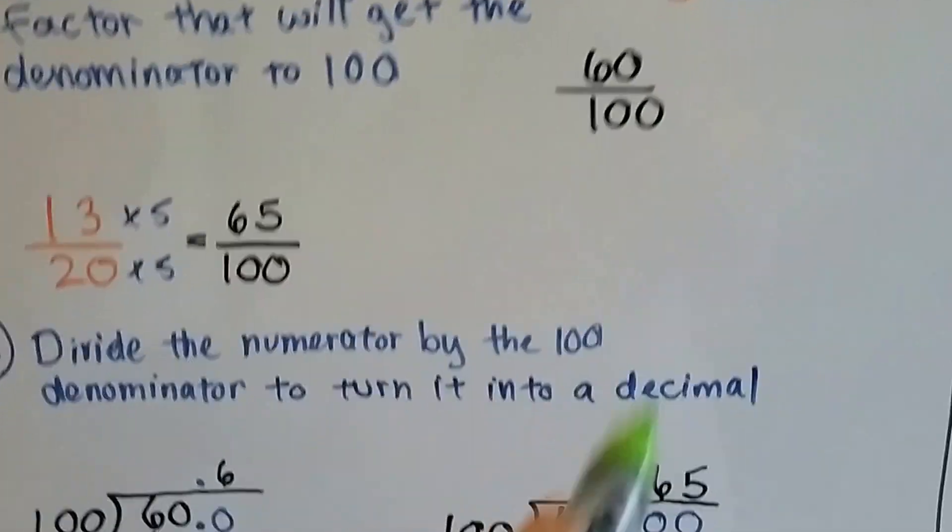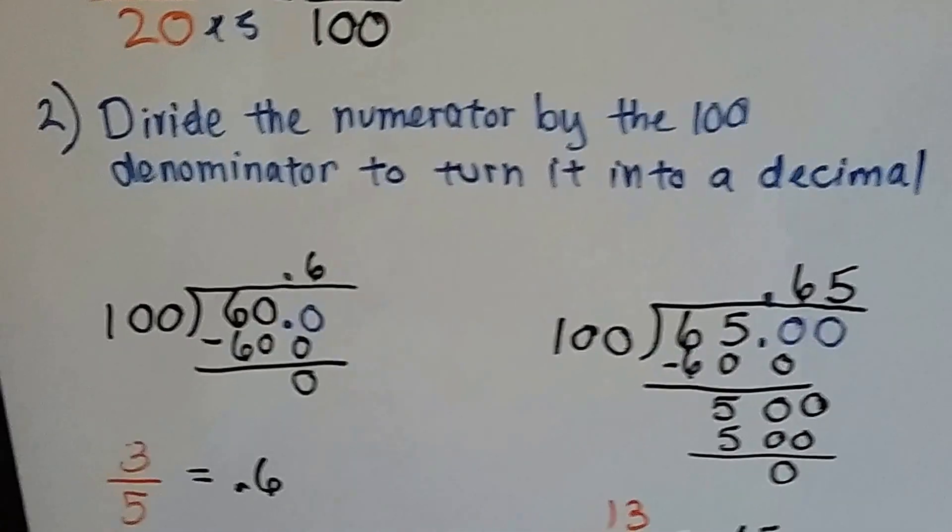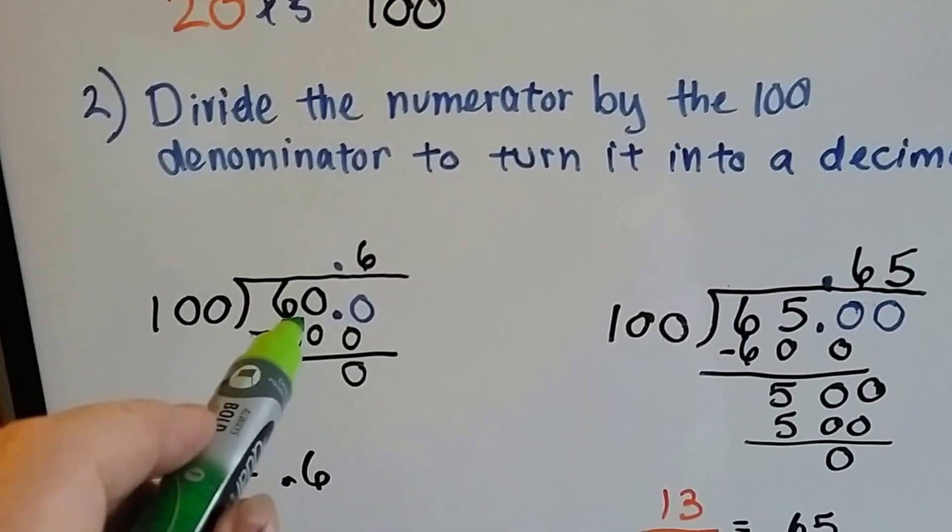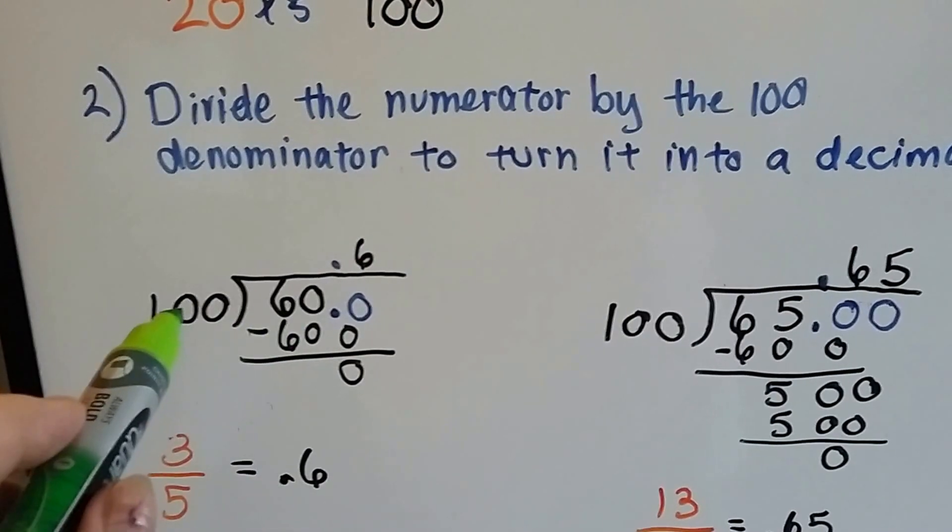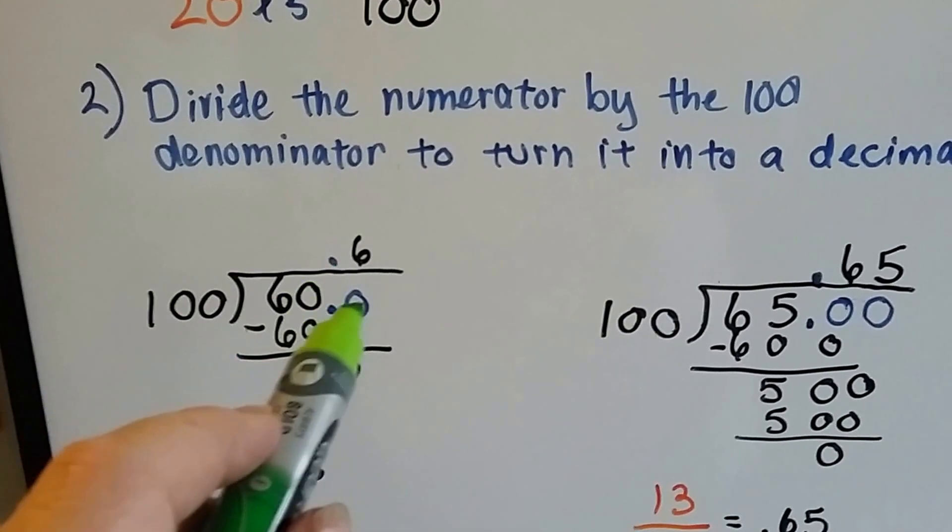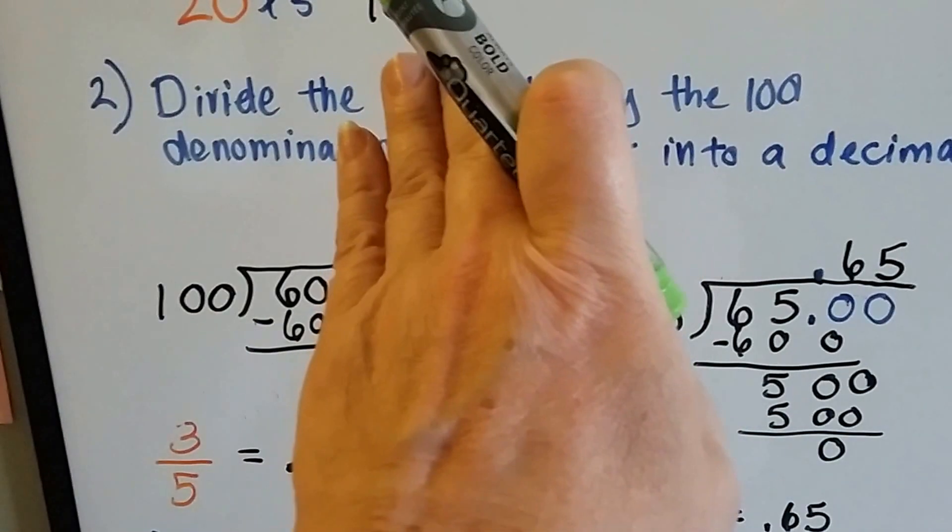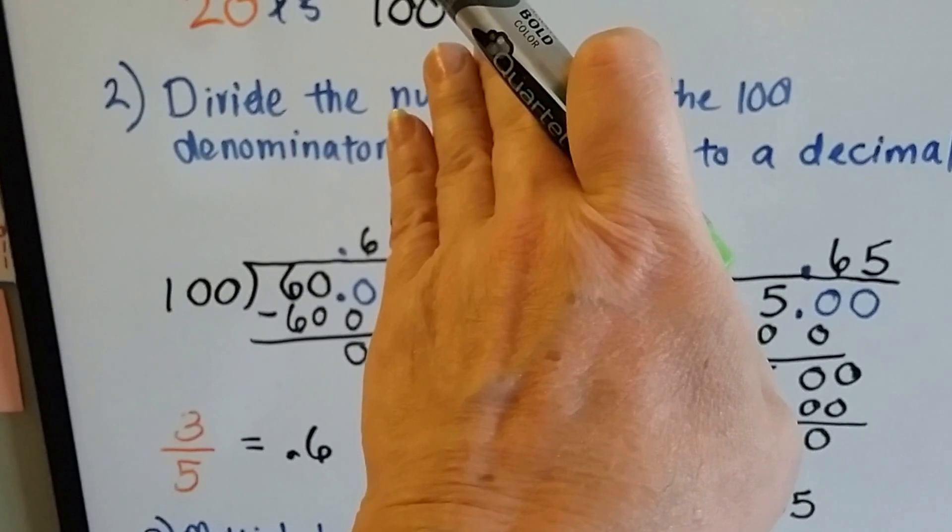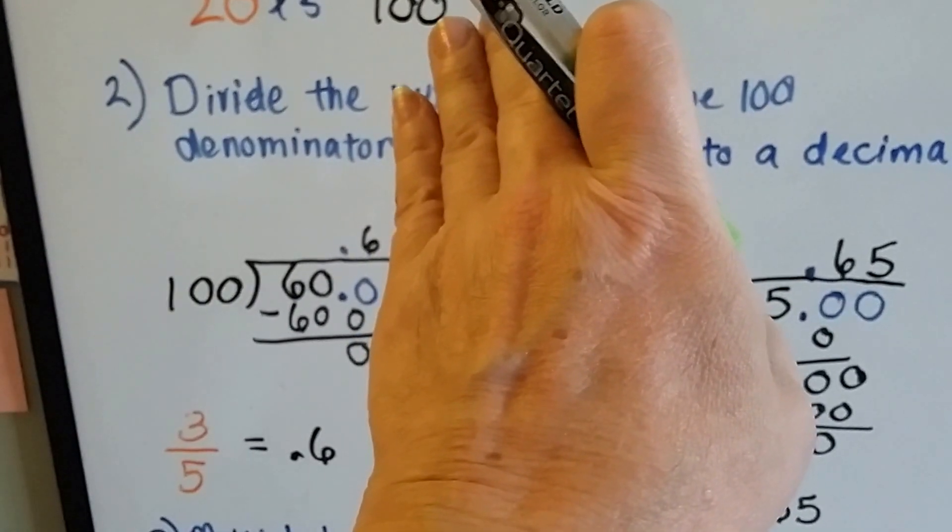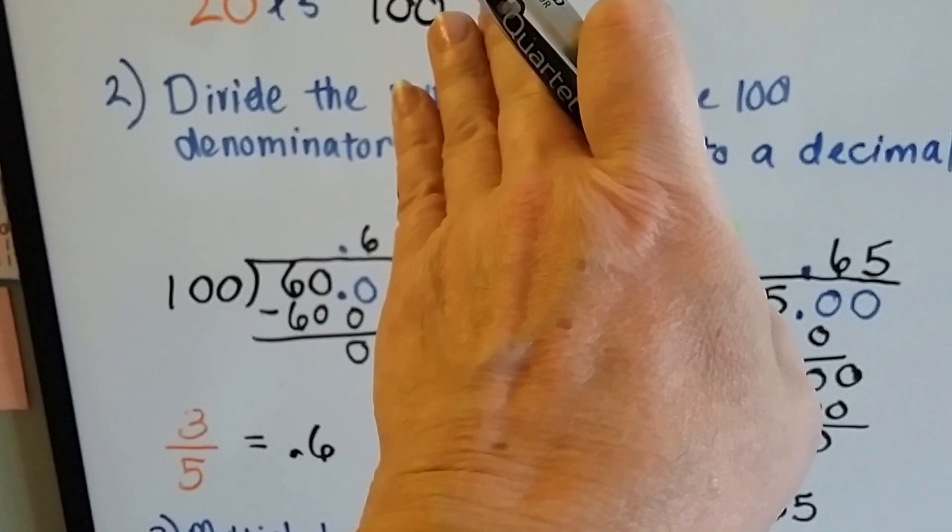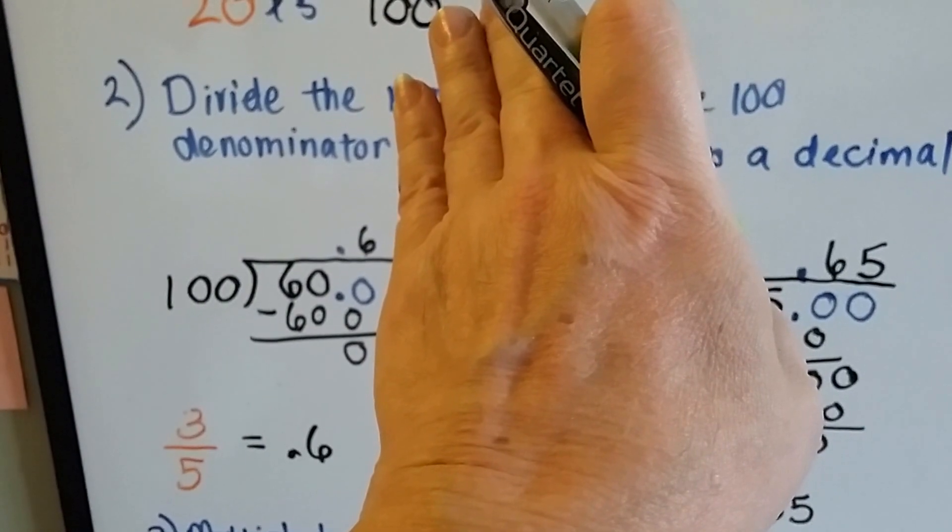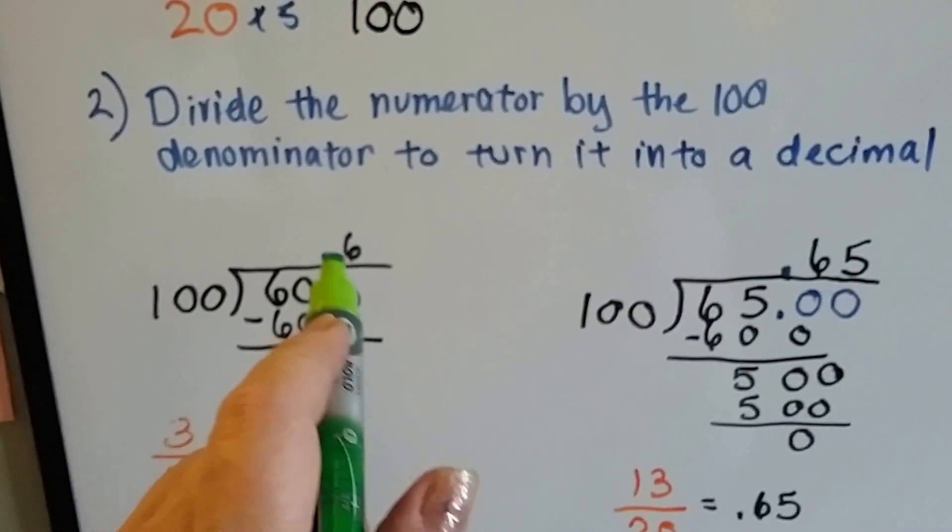So for the 60 over 100, what we do is we put the 60 as the dividend and the 100 as the divisor and we add decimal points and zeros to help us divide. 100 can't go into 60, but it can go into 600 if we add a decimal point and one zero. It goes in 6 times. 100 times 6 is 600 and our answer is .6.